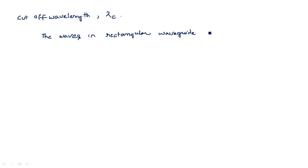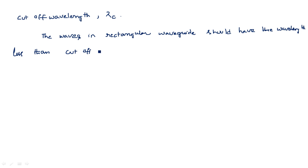The waves traveling in the rectangular waveguide should have wavelength less than the cutoff wavelength. Any general wave having wavelength lambda less than lambda c can only pass through the waveguide. That means our cutoff wavelength is greater than the signal wavelength that is going to travel through the rectangular waveguide.